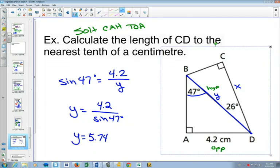Now we have enough information to solve the entire, to go to the other triangle and solve for X. Because we know that this Y is 5.74.